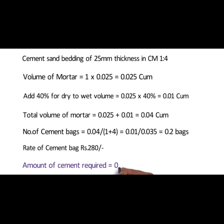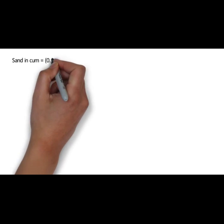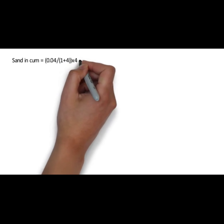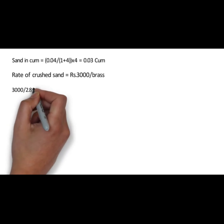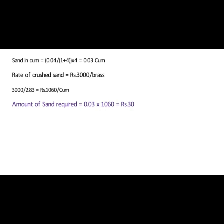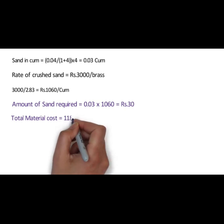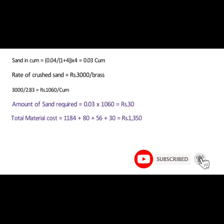Now we will calculate sand in cubic meter. The formula is 0.04 divided by (1 plus 4) into 4 equals 0.03 cubic meter. Sand is 4 times the cement in the proportion 1 is to 4. The rate of crushed sand is 3000 rupees per brass, which means 3000 divided by 2.83 equals 1060 rupees per cubic meter. Amount of sand required shall be 0.03 into 1060 equals 30 rupees. Total material cost is 1184 plus 80 plus 56 plus 30 equals 1350 rupees.